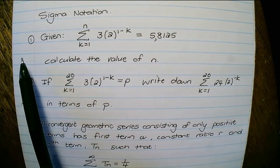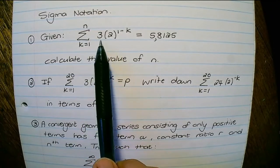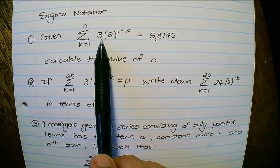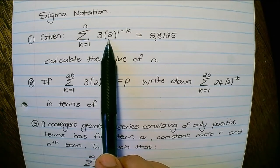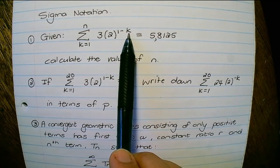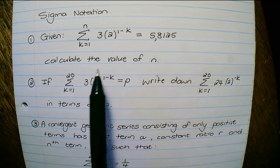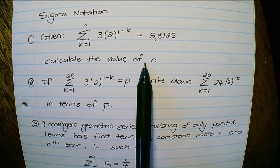In our first question, we are given sigma, and then inside the formula, we have 3 times 2 raised to the power of 1 minus k equals 5.8125, and it says calculate the value of n.